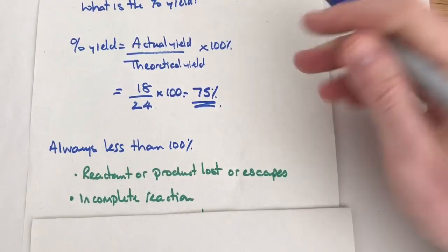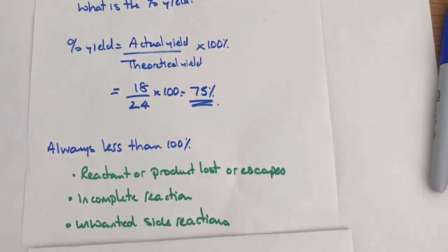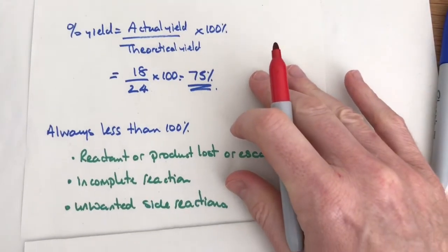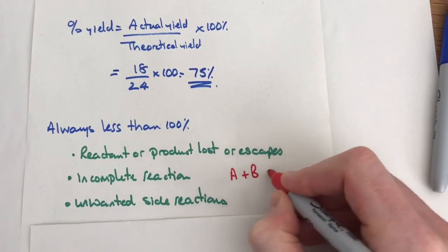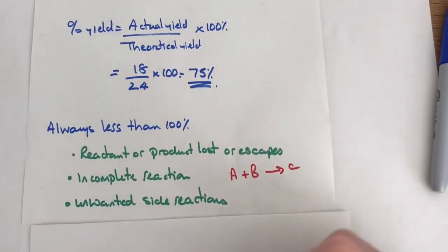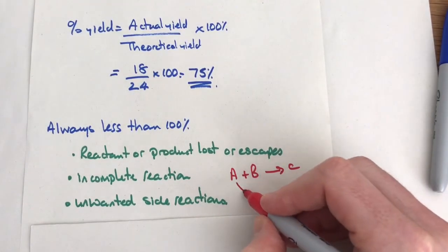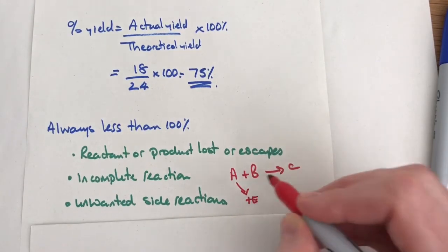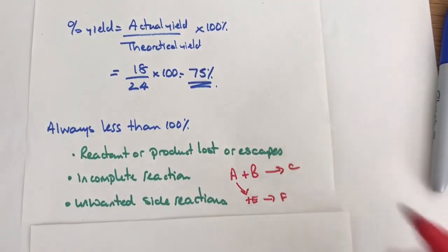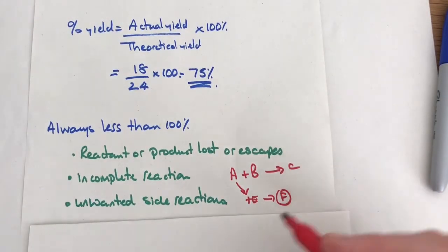Unwanted side reactions. Let me show you what this means. You might want chemical A and B to go together to make C, but during the reaction chemical A goes off down here and it reacts with chemical E and it makes chemical F. Therefore this is an unwanted reaction because we're making a different chemical than the one we wanted.